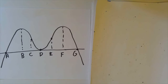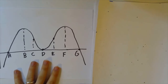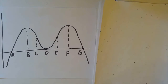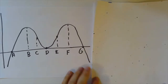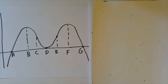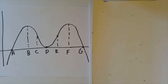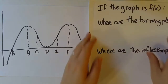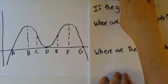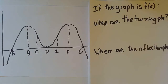So all of this video is going to be discussing this graph — just some function — and we want to talk about the ideas of turning points and inflection points in terms of this graph. If this graph is f(x), then where are the turning points of f(x), and where are the inflection points of f(x)?